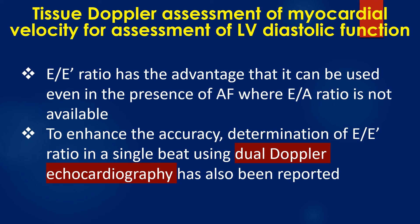E by E prime ratio has the advantage that it can be used even in the presence of atrial fibrillation, where E by A ratio is not available. To enhance accuracy, determination of E by E prime ratio in a single beat using dual Doppler echocardiography has also been reported.